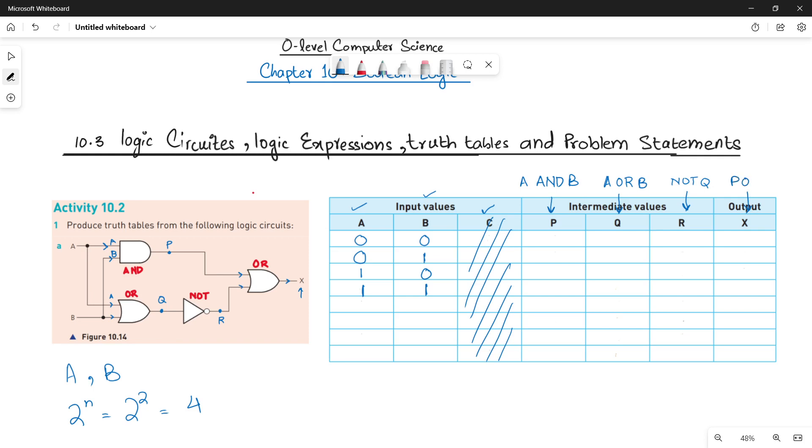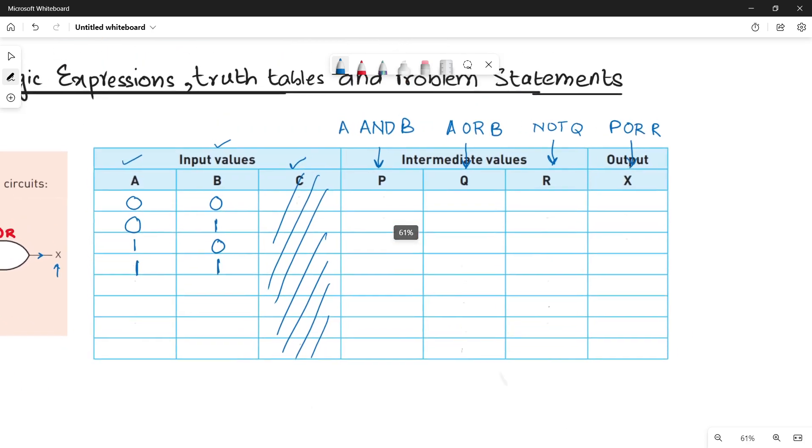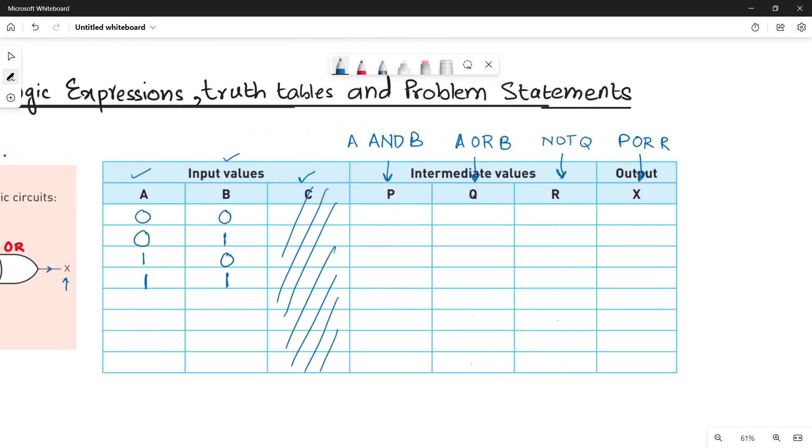Now let's quickly see the truth table and let's do the working for these columns. In the first column you have to do AND operation between A and B. AND operation is your multiplication.